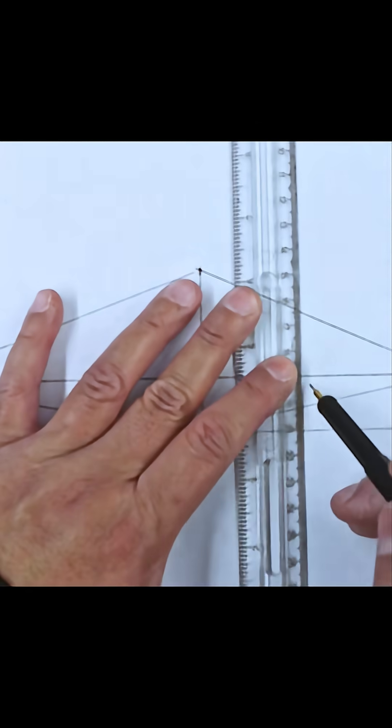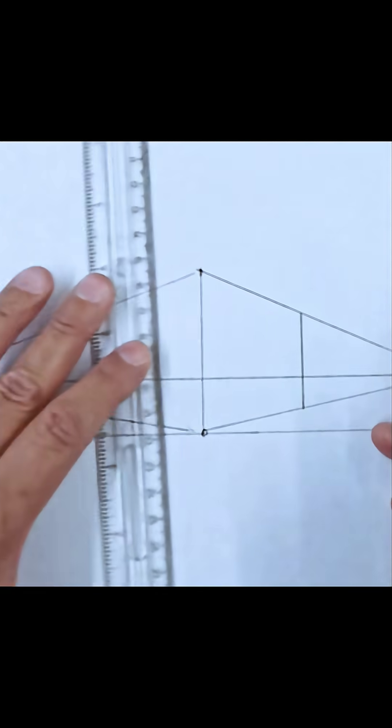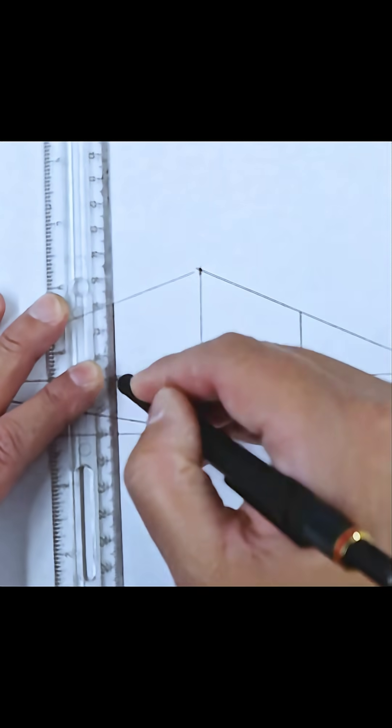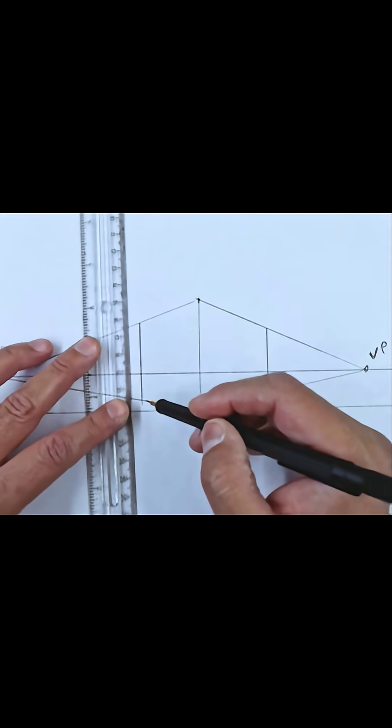You will need to draw two more vertical lines on each side between the diagonal lines to close off your shape.